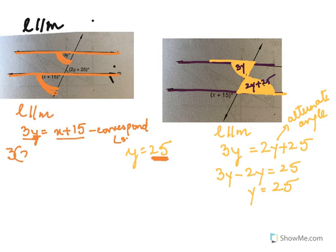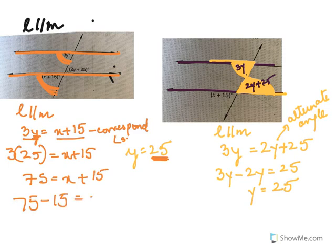So 75 equals X plus 15, and 75 minus 15 equals X, and our X works out to be 60.